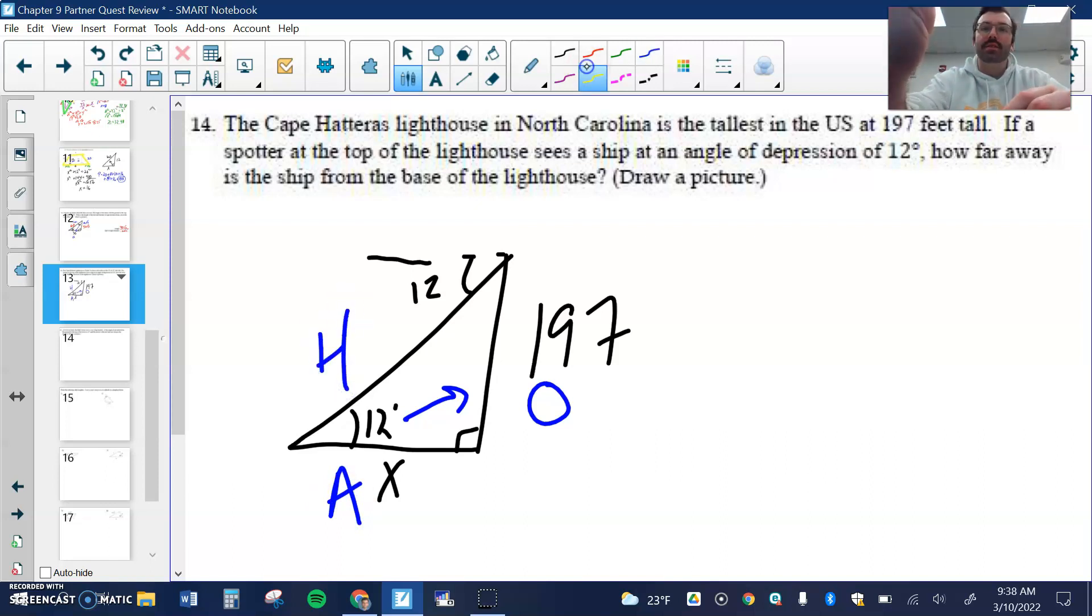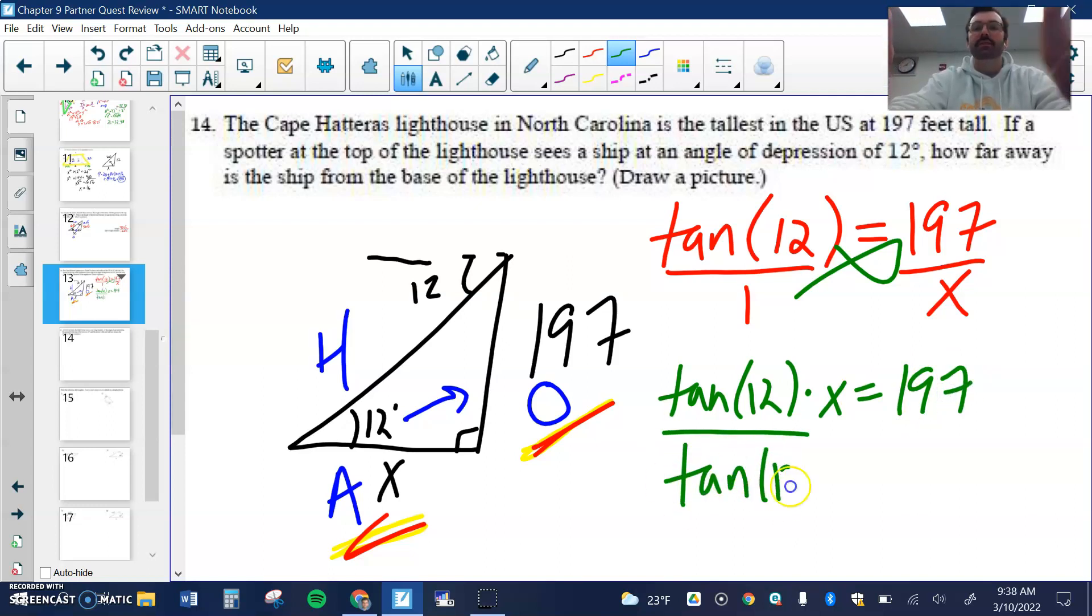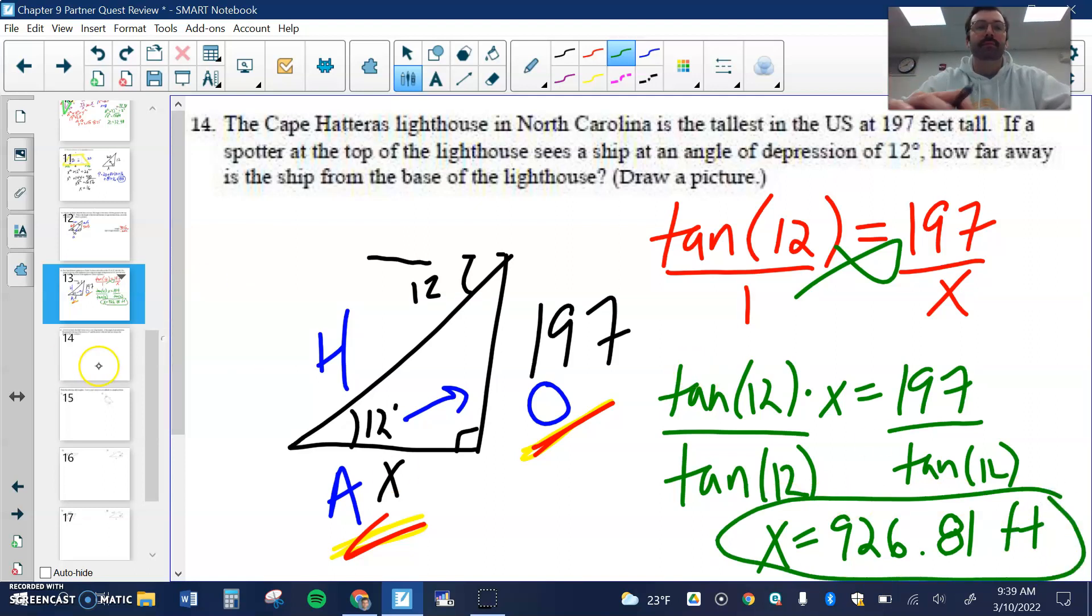I can label my sides O, A, and H and recognize that I have O and A. O and A, so that's tangent. I'm going to take the tangent of 12 and set that equal to 197 over x. Put this over 1, cross multiply. Tangent of 12 times x equals 197. Then divide both sides by the tangent of 12. x would equal 926.81 feet.